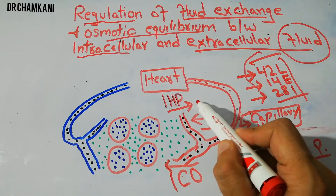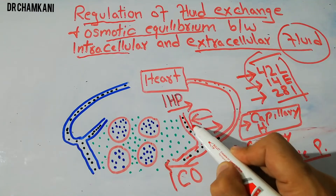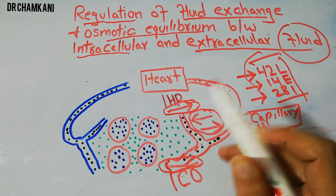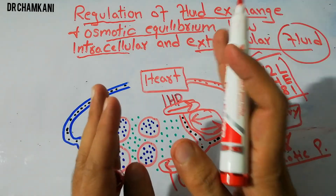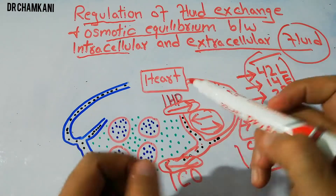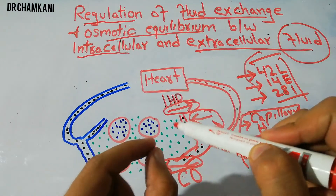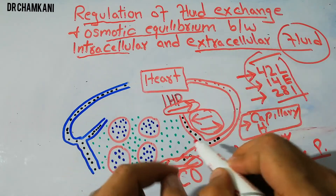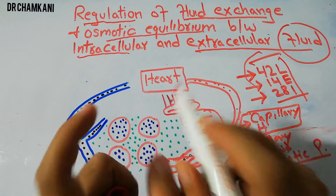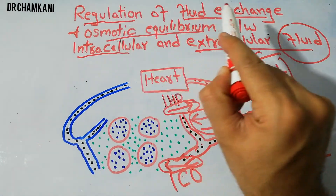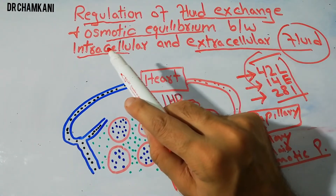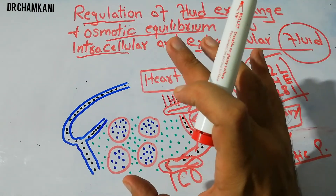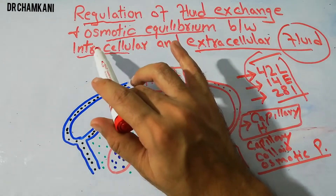So basically we have four forces. The first two forces are in the plasma and two forces are in the interstitium. There is a balance between these four forces, and these forces basically regulate the amount of fluid. They maintain the amount of fluid in the plasma and in the interstitial fluid, and are responsible for the regulation of fluid exchange between the plasma and the interstitial fluid. They are not active at the level of intracellular.